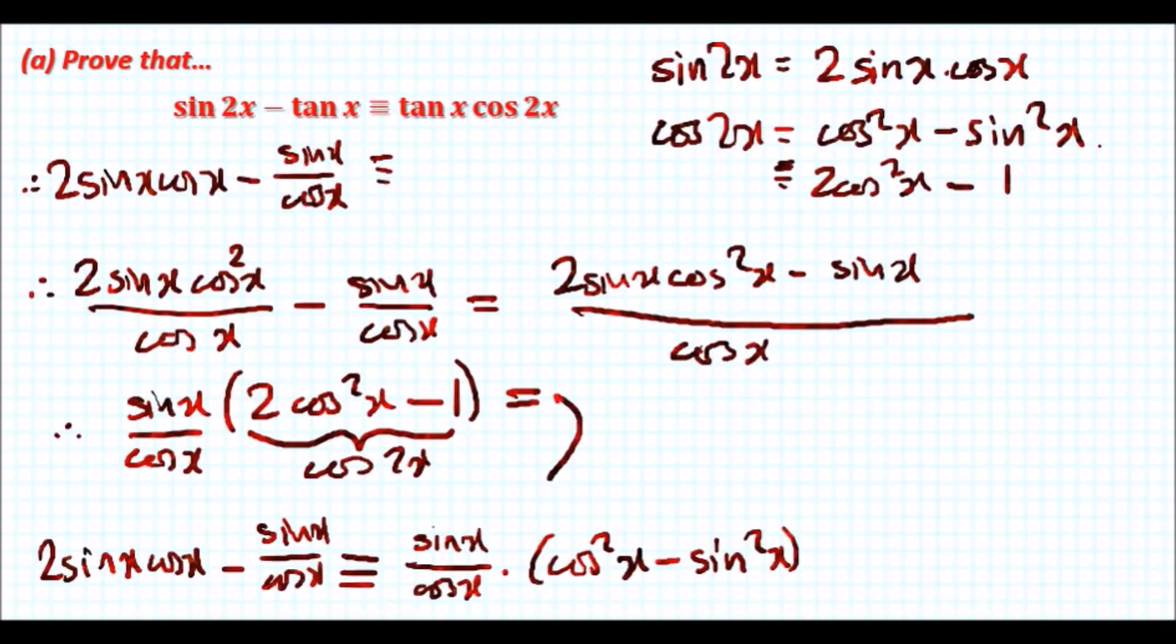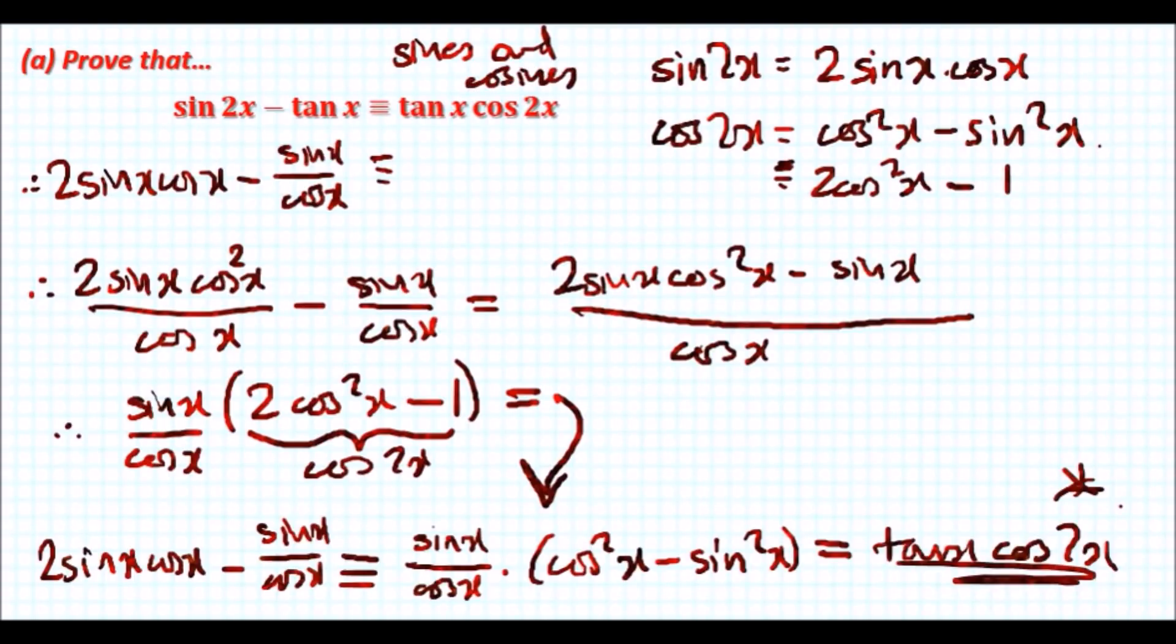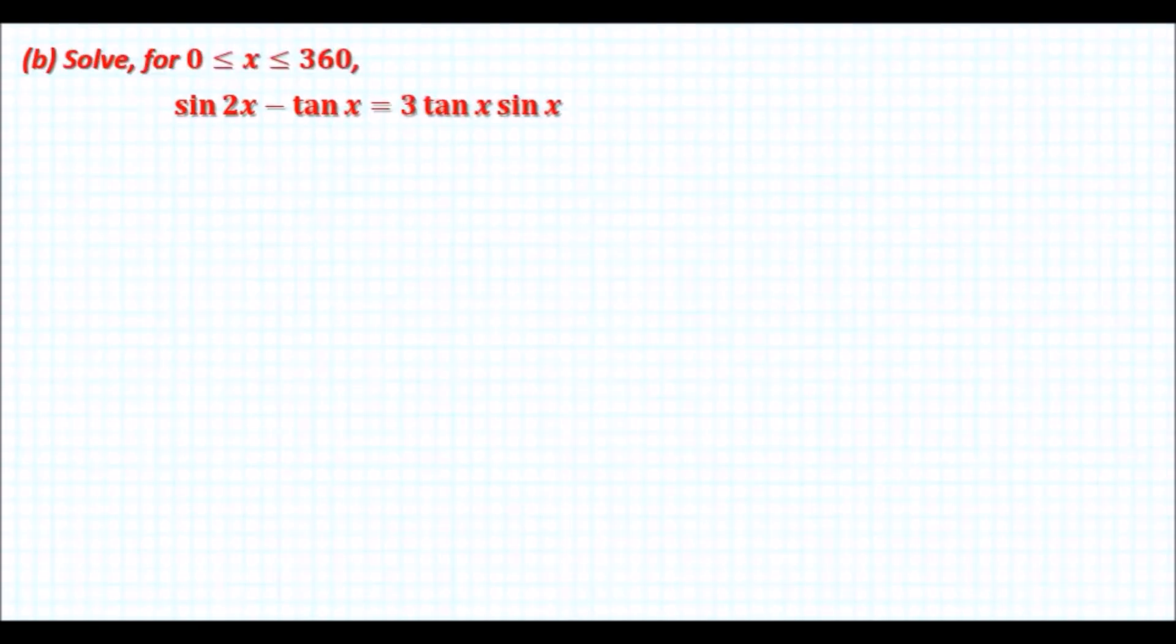This term right here is actually cos 2x and that's it, we've proven it. Therefore this would become this term and finally this can be rearranged to be tan x cos 2x. That's guys, this is my shortcut done. Recap: always convert everything into sines and cosines.